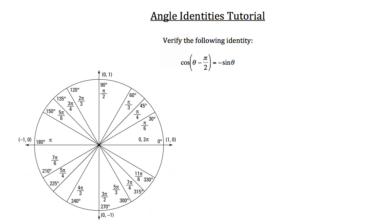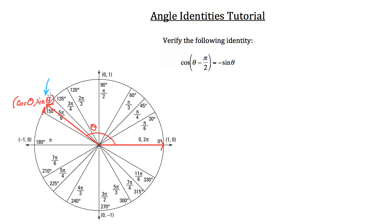Let's run through some background information you should know by this point. On the left we have the unit circle, and any angle drawn in standard position has a measurement of theta — just a variable, undefined amount. If I draw in this angle, we can identify it as theta. If the point on the terminal side of this angle intersects the circle at point A, then the x-value of that point can be defined as cosine theta. Standard position means one ray begins on the x-axis.